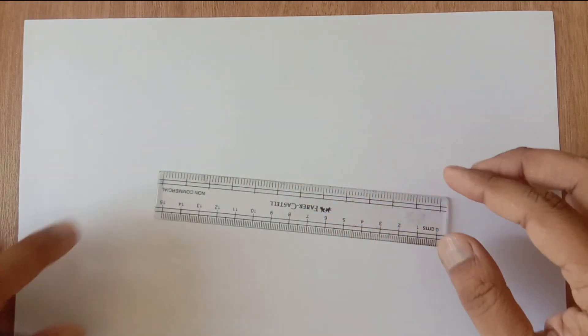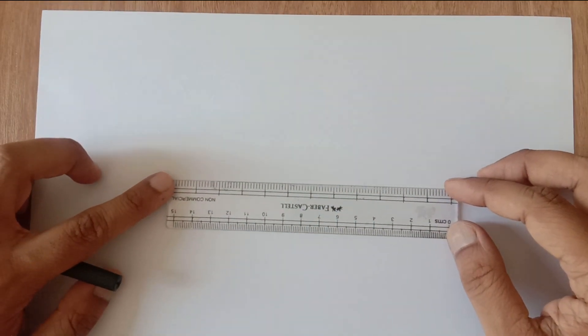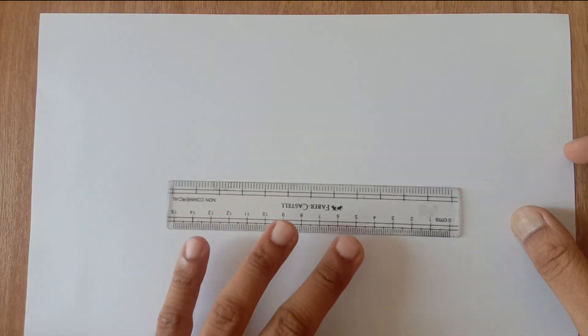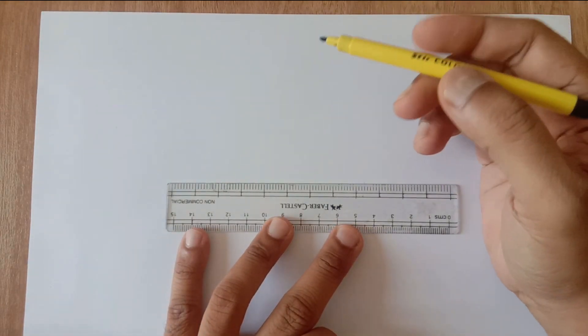We know that if we apply the laws of reflection we would be needing the protractor. But here we do not require the protractor. And even if you use the protractor what happens is the image is not exactly formed behind the mirror at the expected location.